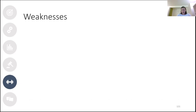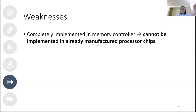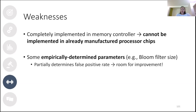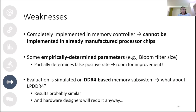BlockHammer does have some weaknesses. First, it cannot currently be implemented in existing processor chips — though this also holds for many other relevant solutions except increasing the DRAM refresh rate. Second, some parameters are determined empirically, including the counting bloom filter size, which influences the false positive rate of the bloom filters, leaving room for improvement. Third, the evaluation is only simulated on a DDR4-based memory subsystem, leaving questions about LPDDR4, DDR3, and other standards — though results are expected to be similar, and hardware practitioners would redo simulations for their own memory systems.